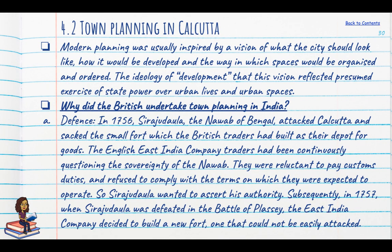We now move to Calcutta to see how town planning was undertaken — though to be clear, Bombay and Madras also had significant town planning. Modern planning was usually inspired by a vision of what the city should look like — the ideology that this vision would reflect the exercise of state power over urban lives and urban spaces.